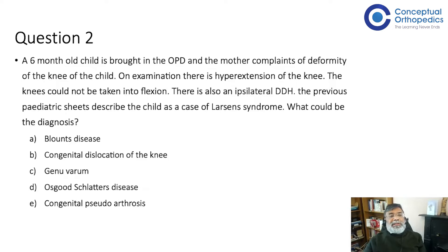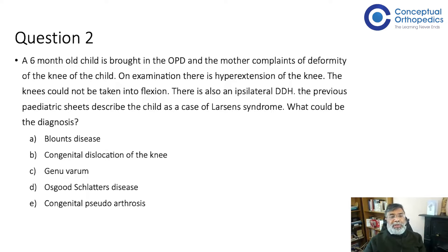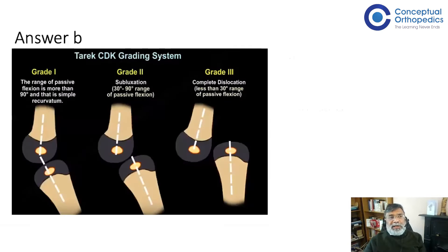We have discussed genu varum in detail — physiological genu varum, rickets, and Blount's are the three you need to know. We will discuss Osgood-Schlatter's later and also bowing of the long bone along with joint deformity, so congenital pseudoarthrosis will be covered there. Congenital dislocation is a bit of a misnomer here because the knee may not be completely dislocated — it may be just hyperextension, subluxation, or complete dislocation, with a spectrum of severity.